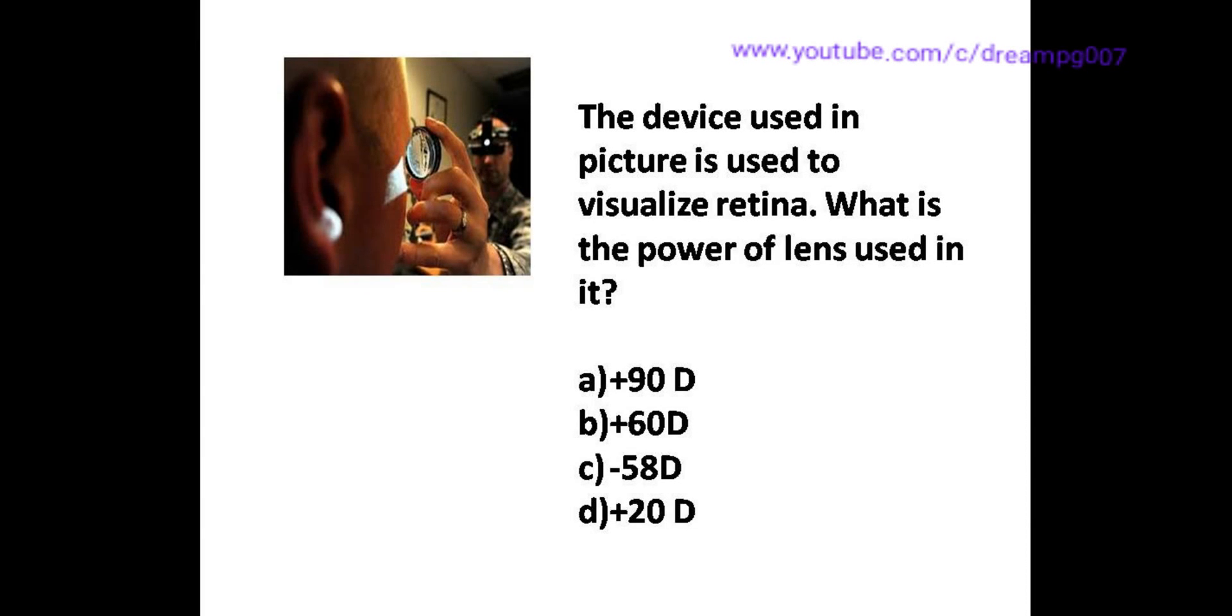Hi friends, the device used in this picture is used to visualize retina. What is the power of the lens used in it? Option A: plus 90 diopter, Option B: plus 60 diopter, Option C: minus 58 diopter, Option D: plus 20 diopter.